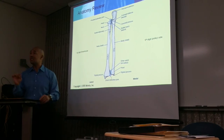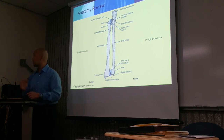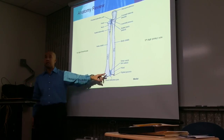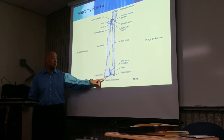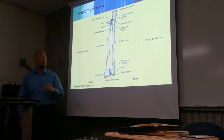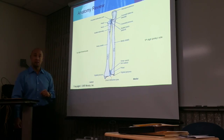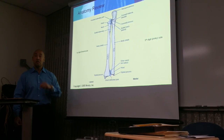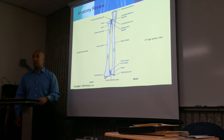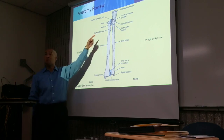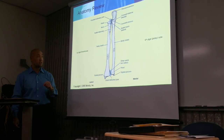The ulna technically isn't part of the wrist joint — it doesn't articulate with the carpal bones; it's only the radius. The bony projection here is the styloid process of the radius. On the ulna, you also have a bony projection: the styloid process of the ulna. The articulation between the two bones is the radial ulnar joint. We have two radial ulnar joints — one distal towards the wrist and one proximal towards the elbow.